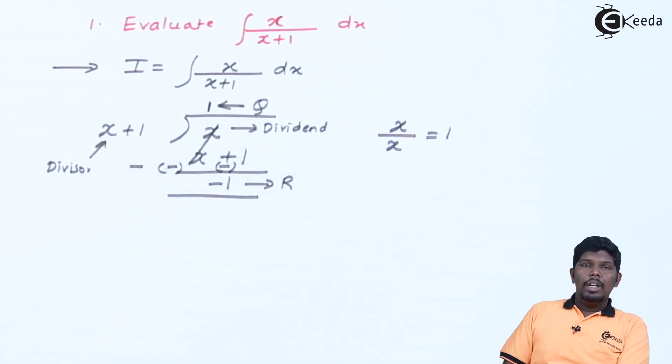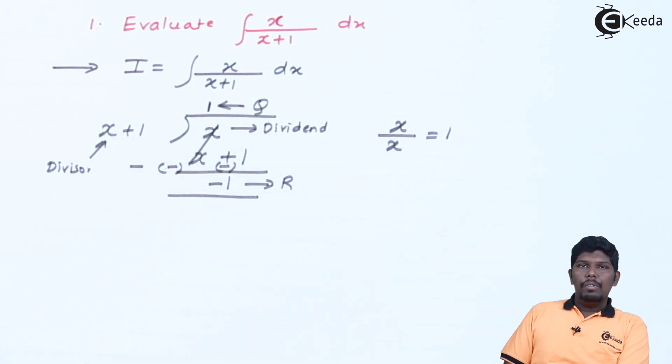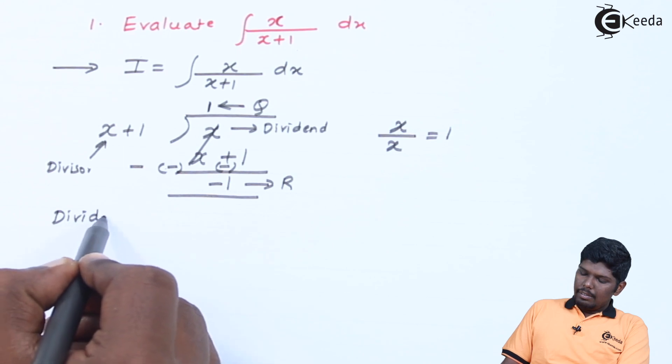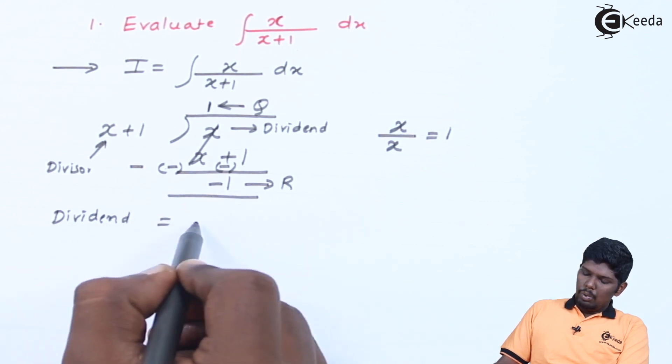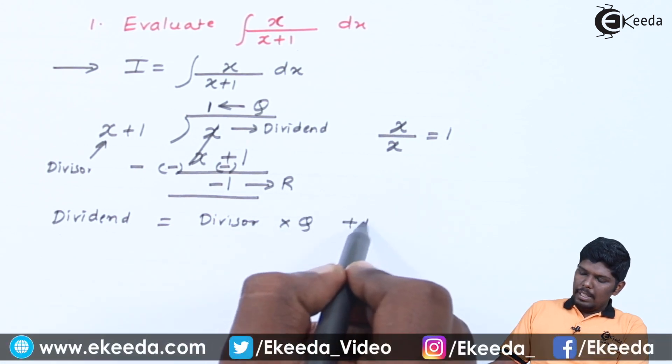Now you also have learned a formula between these 4 terms in your previous standards. This is written as dividend is equal to divisor into quotient plus remainder.